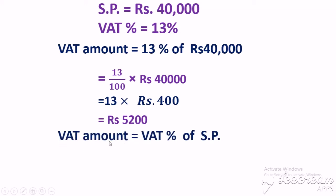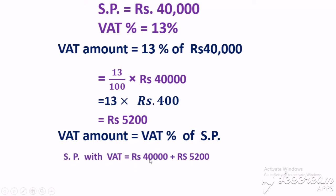Now we are going to derive a formula from this. VAT amount equals VAT percent of SP (selling price). VAT percent is always applied on the selling price. The total selling price with VAT equals Rs. 40,000 plus Rs. 5,200, which is equal to Rs. 45,200. So the total cost of the mobile with VAT is Rs. 45,200.